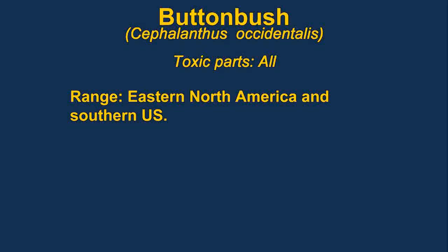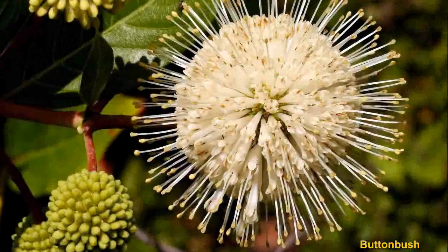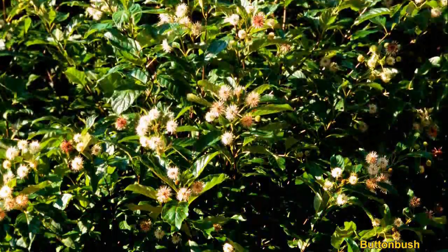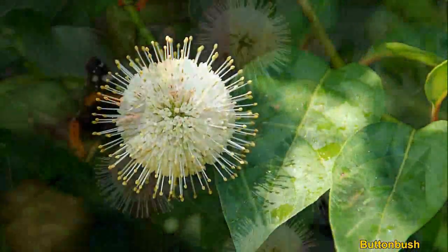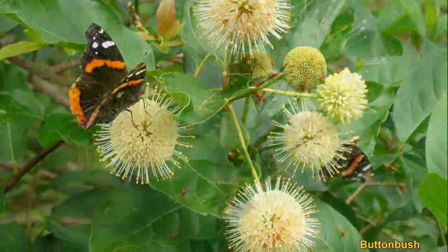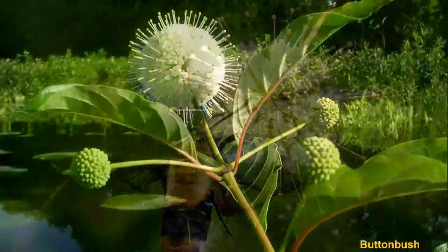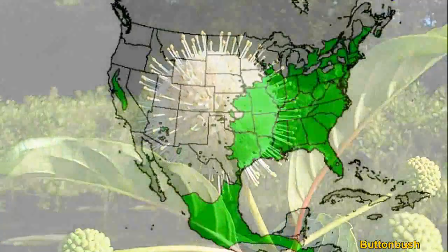Buttonbush is a member of the coffee family, native to eastern and southern North America. The plant contains a poison, cephalanthine, which causes vomiting, convulsions, and paralysis. The shrub can be very common in swamps and wet woods.